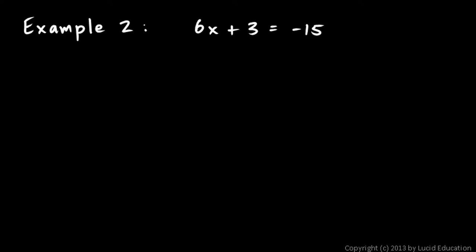Here's another example that we will solve the same way: 6x plus 3 equals negative 15. I'm going to start by isolating the term that contains the x, so that means I need to get rid of this plus 3.